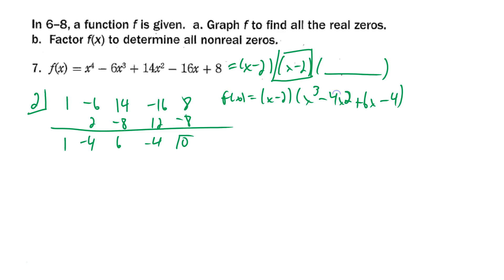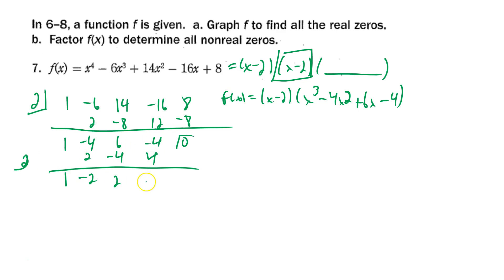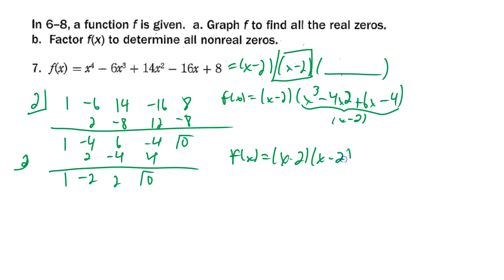Now I do a second synthetic division on x³ - 4x² + 6x - 4 with 2 in the box again: 1 comes down; times 2 is 2; -4+2 = -2; times 2 = -4; 6-4 = 2; times 2 = 4; -4+4 = 0. So f(x) = (x-2)(x-2)(x² - 2x + 2).